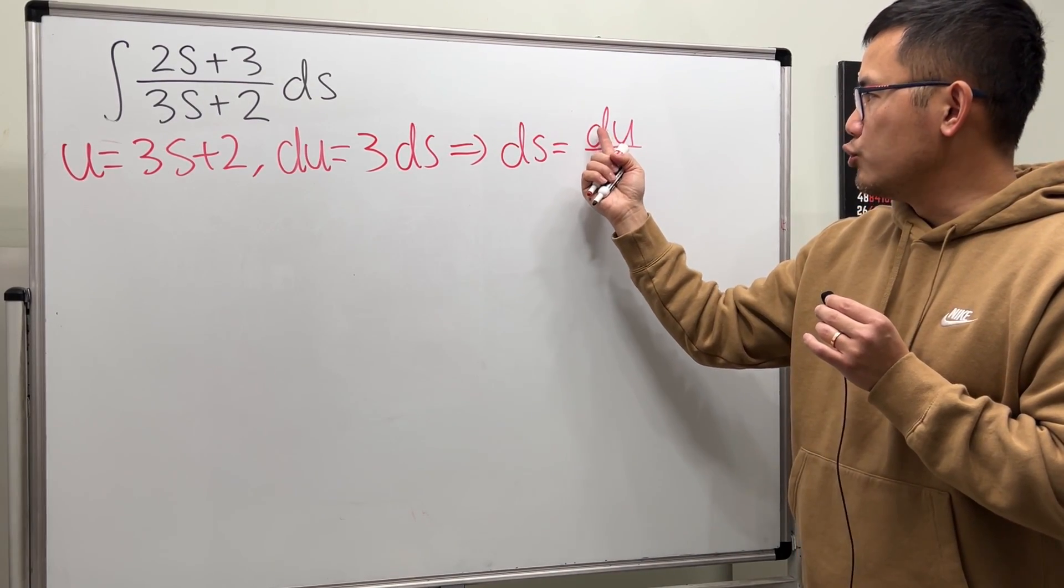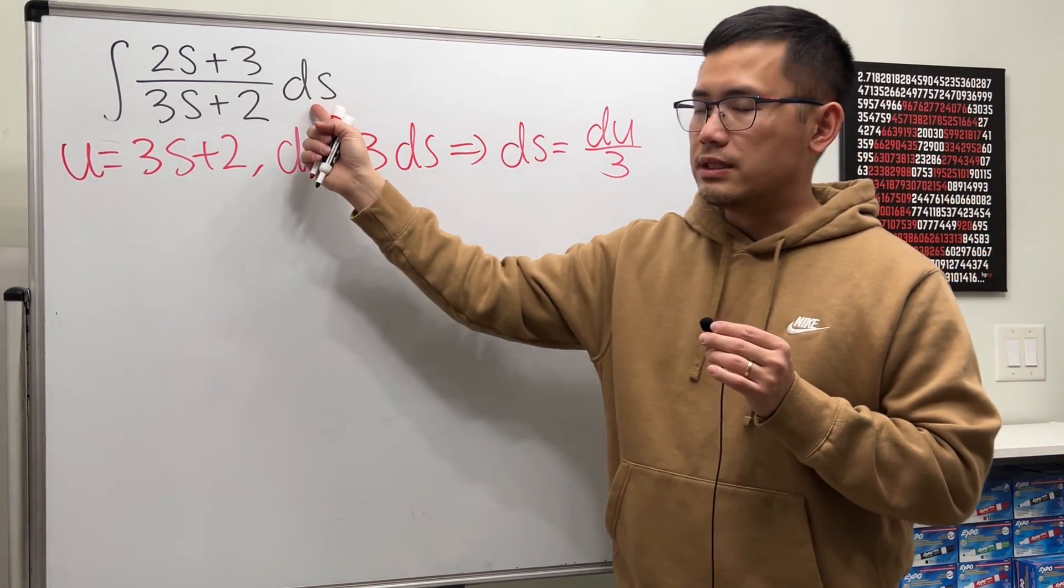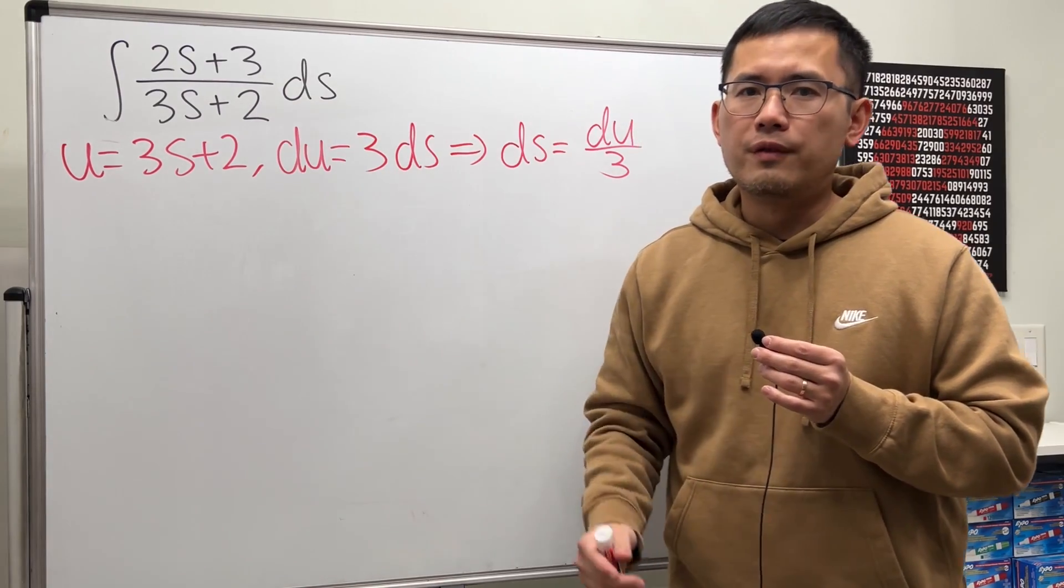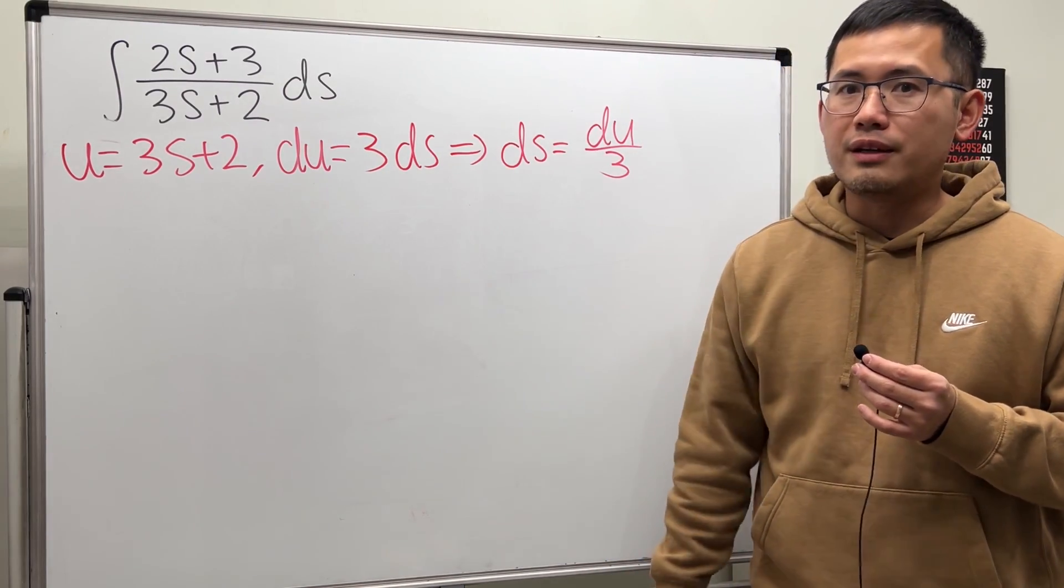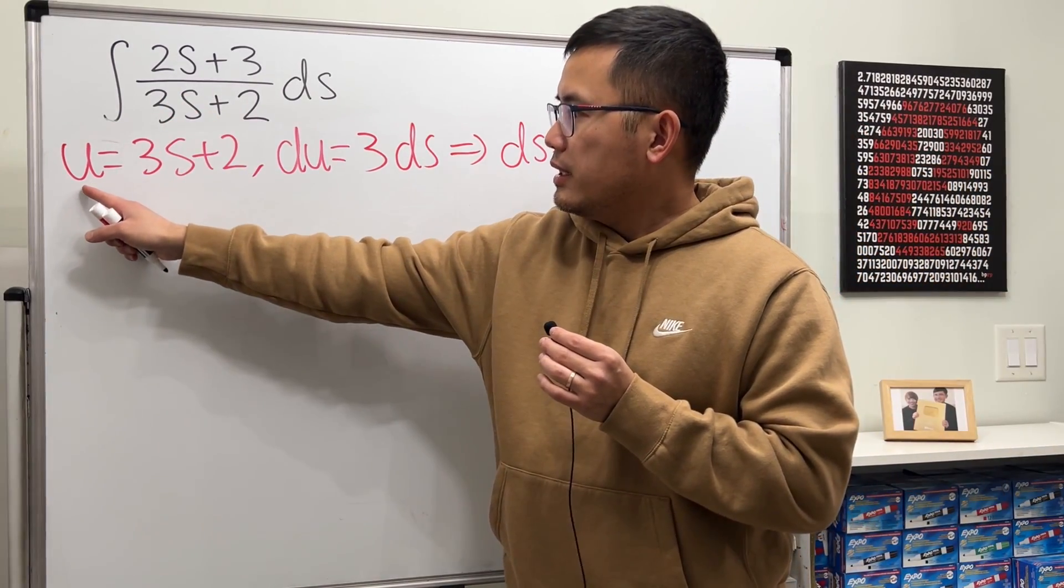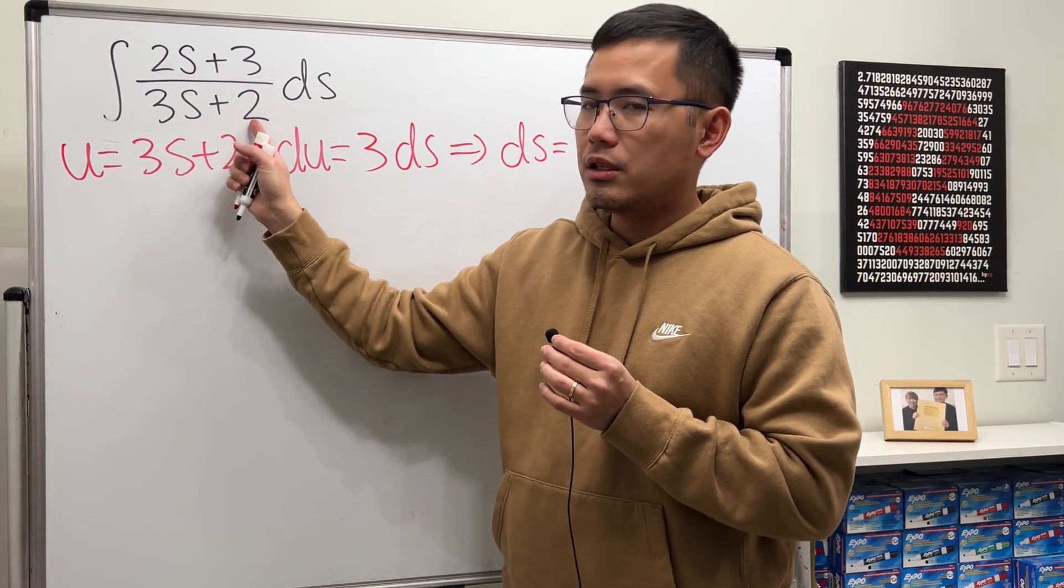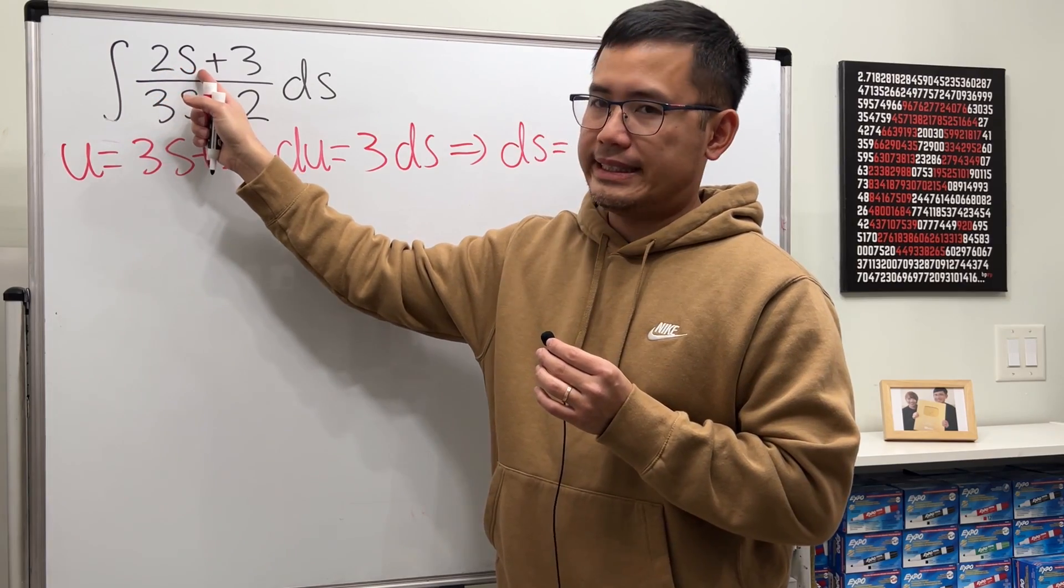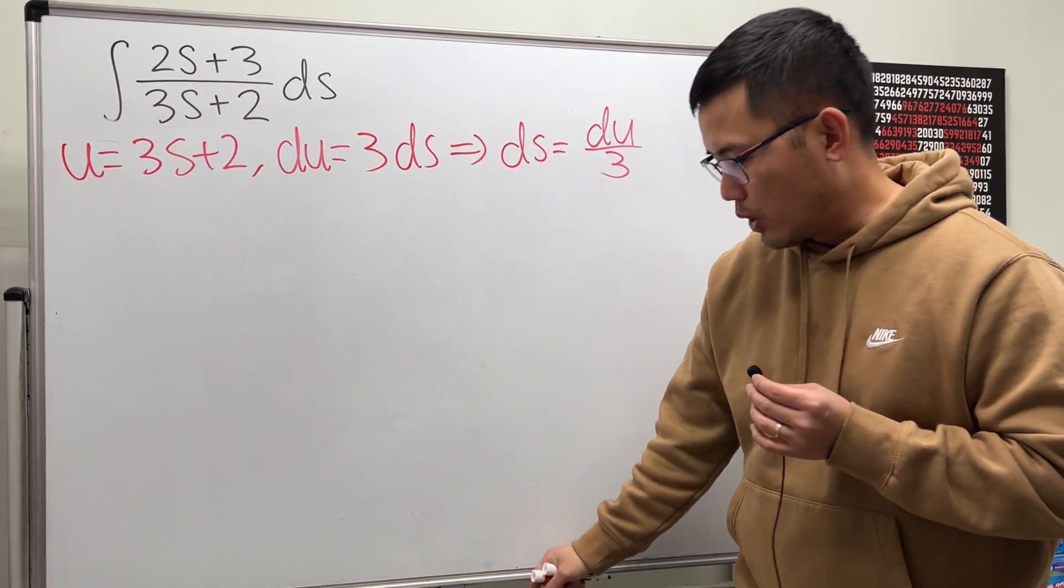So it seems that if we replace the du over 3 with the ds, then we should just get 1 over 3, right? How did that get 1 over 9? Well, here's the deal. Look at the u. It is just the denominator. Right here, we have 2s. This s has to be changed in terms of u as well.